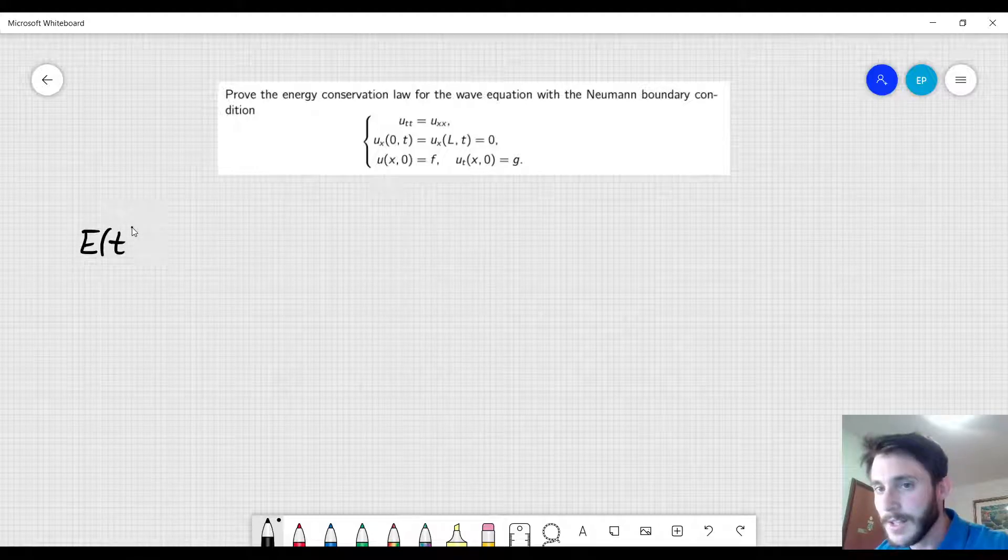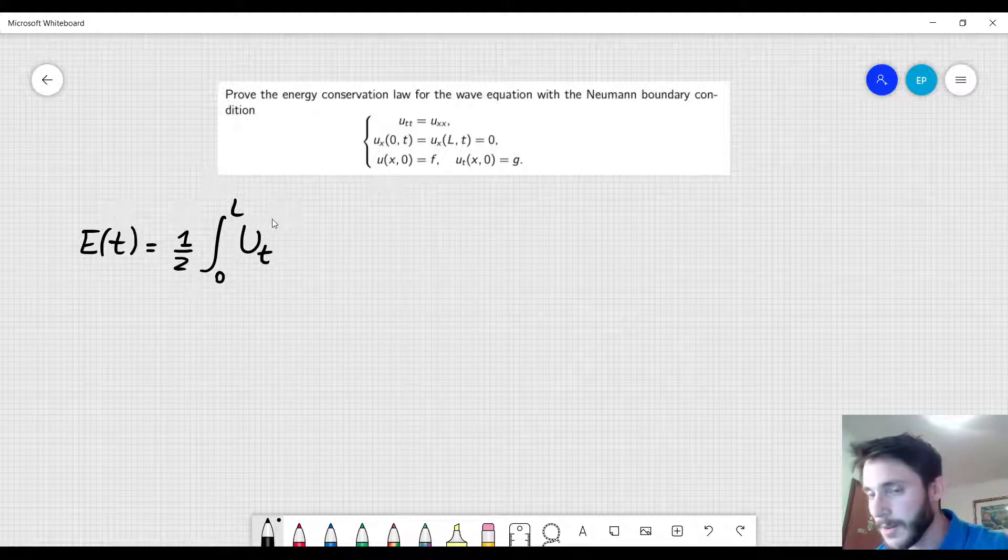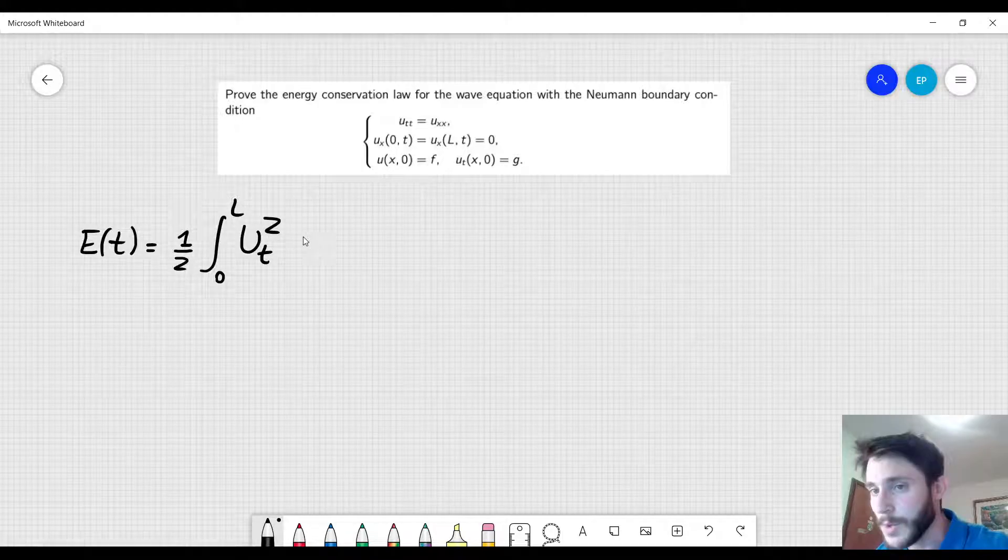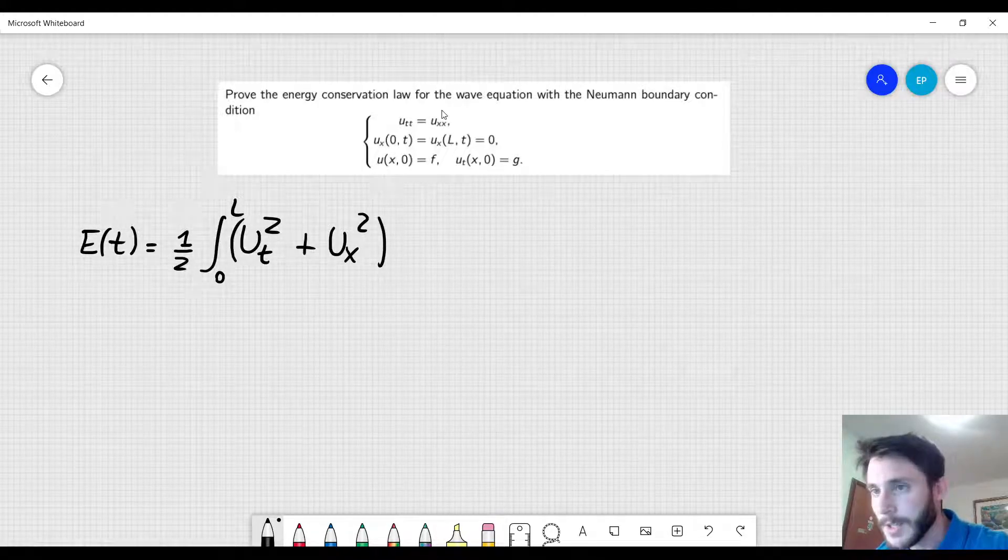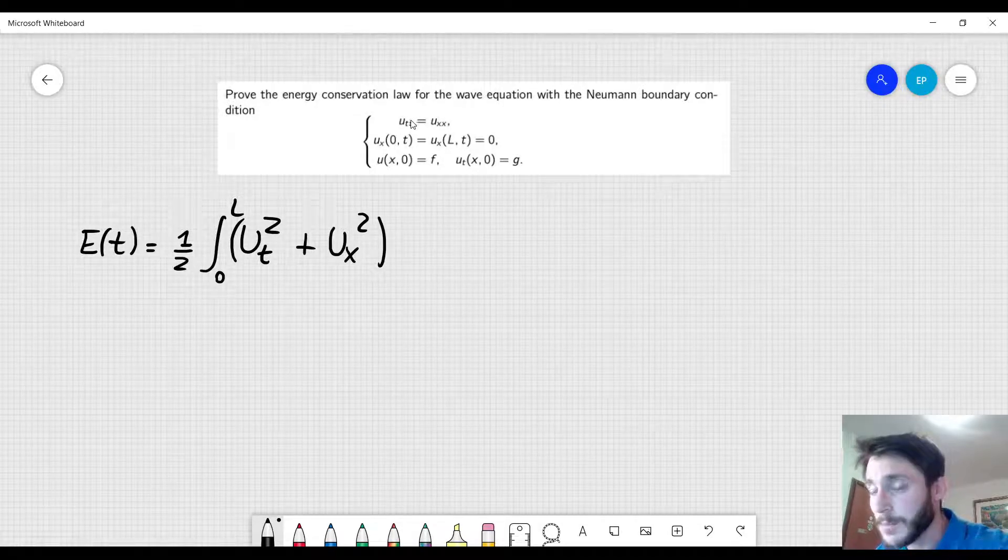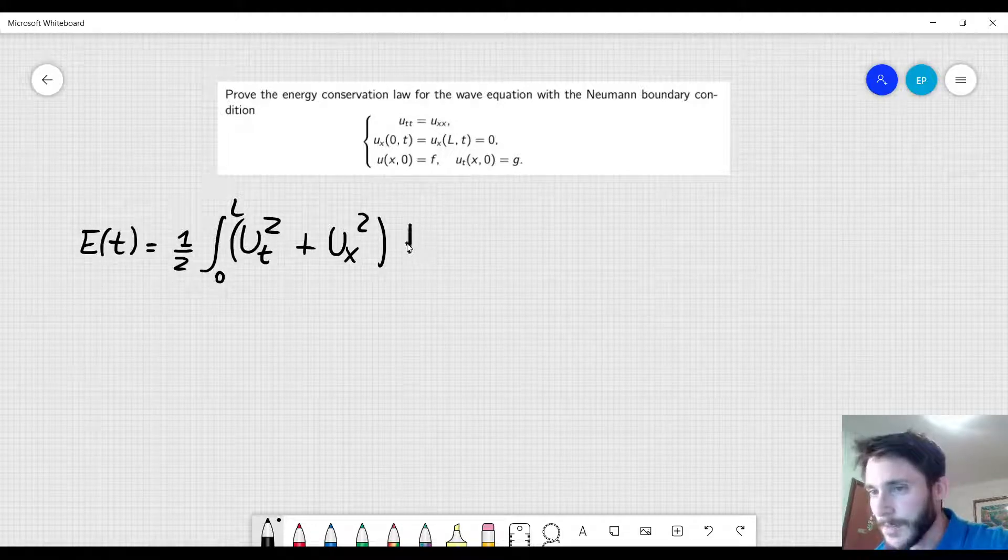The energy e is defined like this: it's 1/2 integral from 0 to L of u_t, the derivative of u with respect to time squared plus u_x squared. In this case where the speed, which is usually denoted by c, the letter c of the wave is equal to 1 in this case dx.